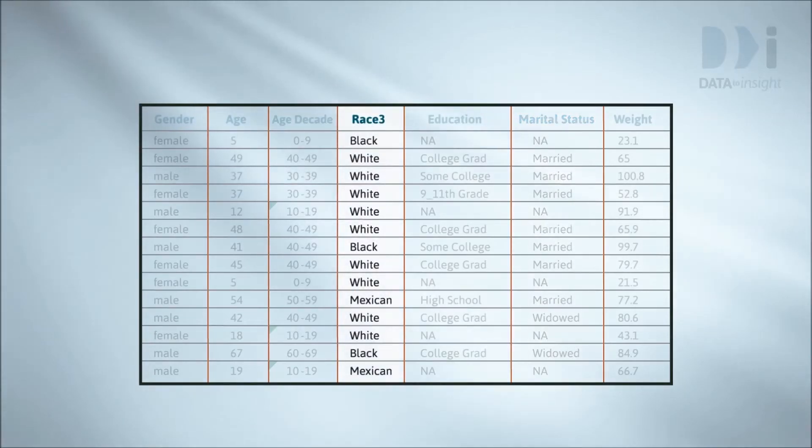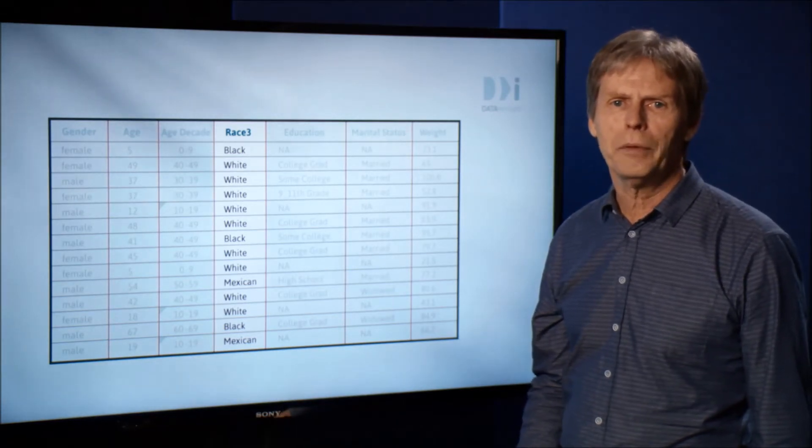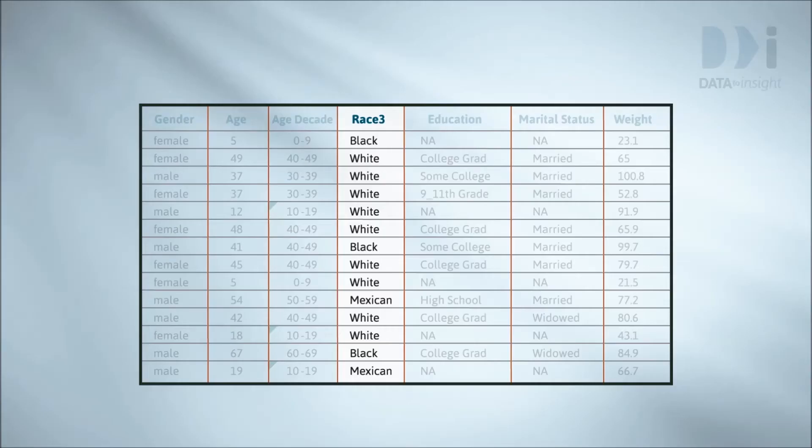Next, we'll look at the data on race. In 2011, NHANES changed their race categories to separate out Asian. It had previously been included in other. The name of the new variable is race 3. These entries suggest that white will be the most common category.